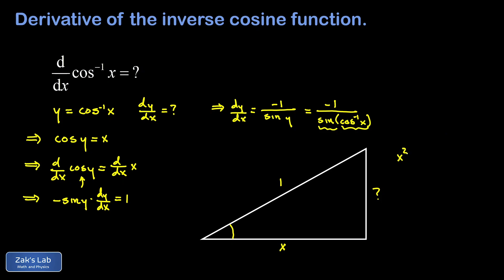And then we write down the Pythagorean theorem. So I have x squared plus question mark squared equals 1 squared. That means question mark squared is 1 minus x squared, and then I square root to solve for my question mark. And again that's going to be 1 minus x squared square rooted.